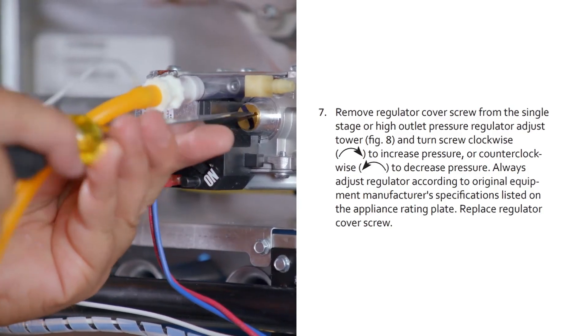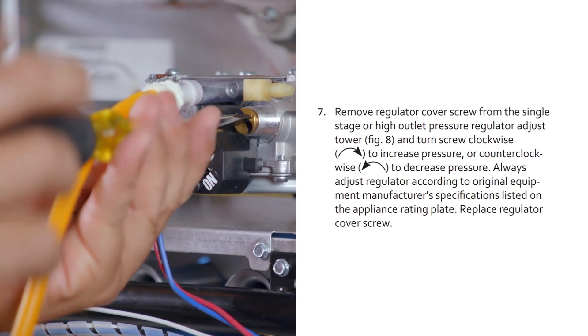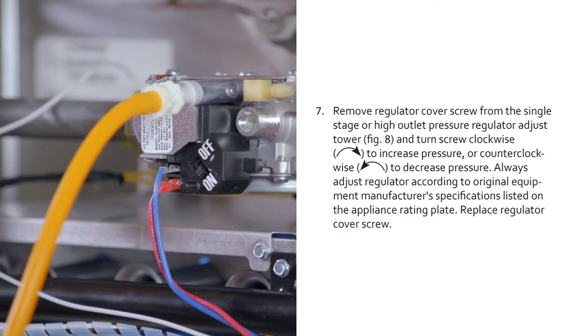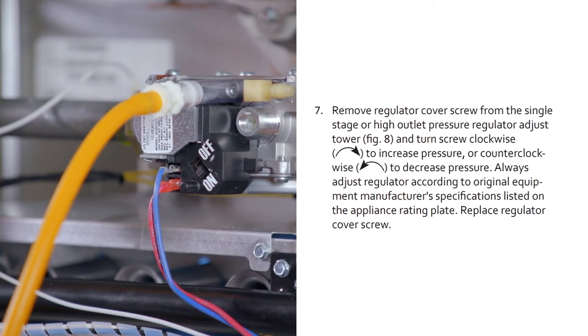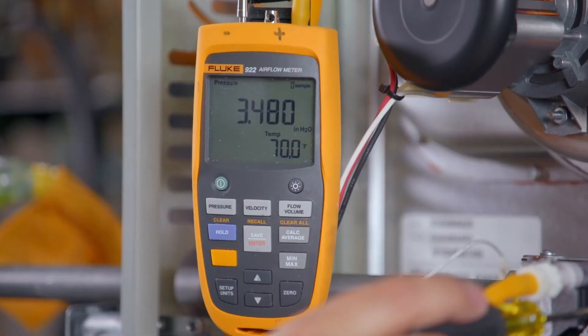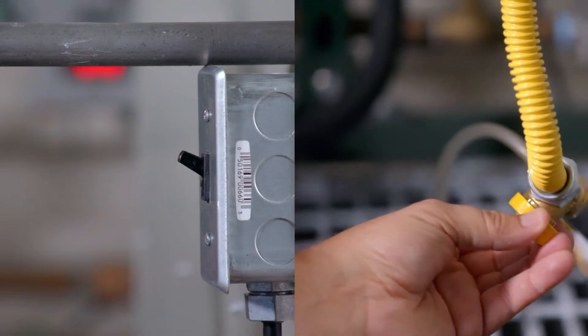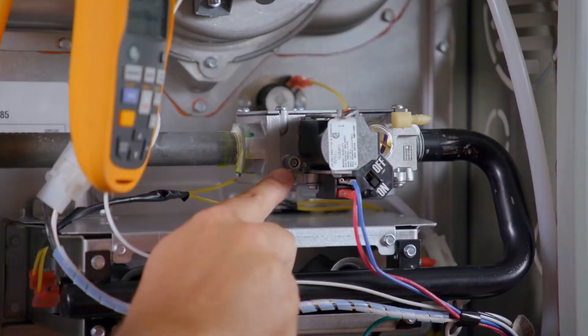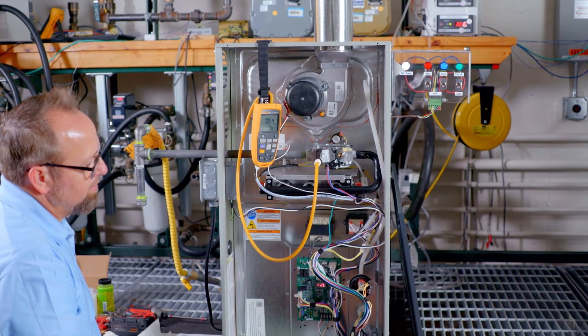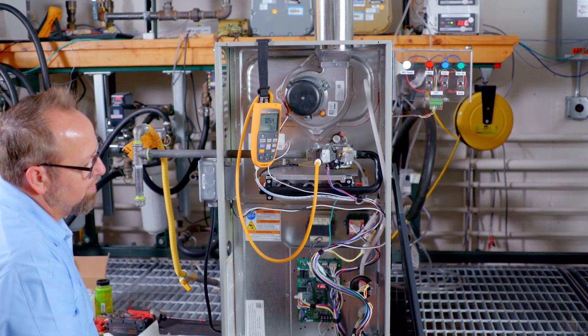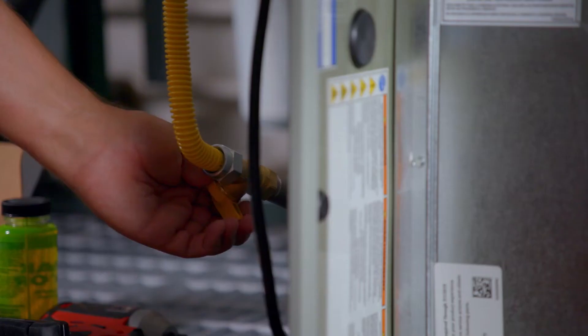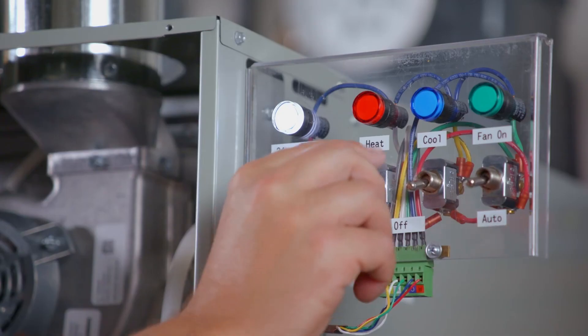If adjustment is necessary, remove the regulator cover screw from the pressure regulator post and adjust. Turn the regulator's plastic adjustment screw clockwise to increase pressure or counterclockwise to decrease pressure. If the outlet pressure cannot be correctly set, the inlet pressure should be checked. Turn off the gas and electric, remove the gas manometer from the outlet post and reinstall it on the inlet pressure post, following the same steps of loosening the pressure tap screw one quarter to one half a turn open. Make sure the outlet pressure tap screw is retightened and secure before turning the gas, electric, and system back on.